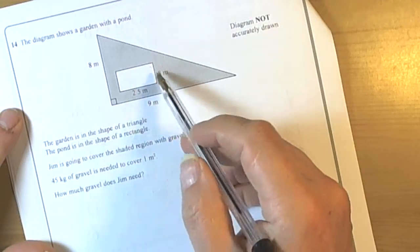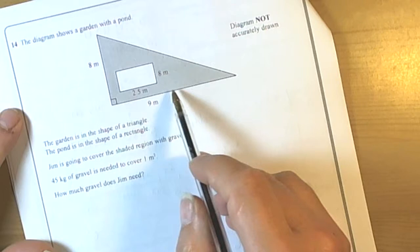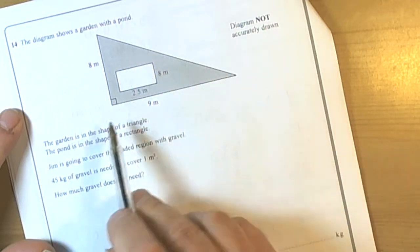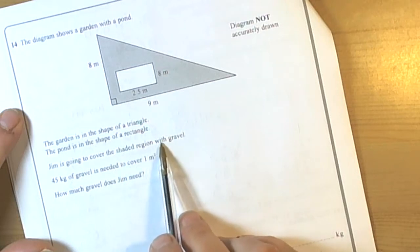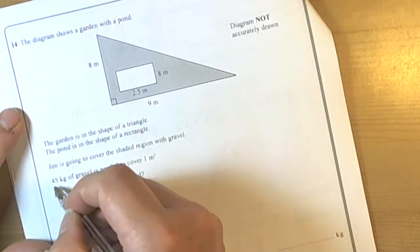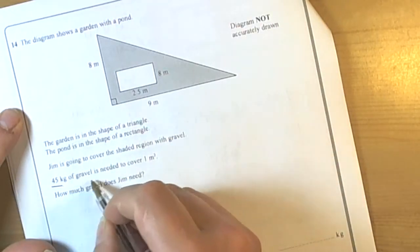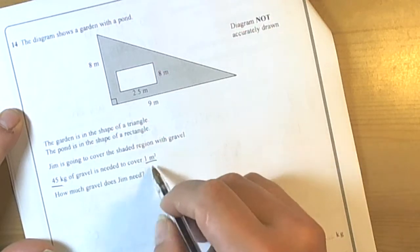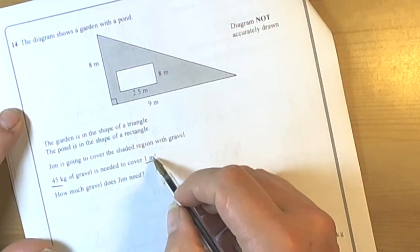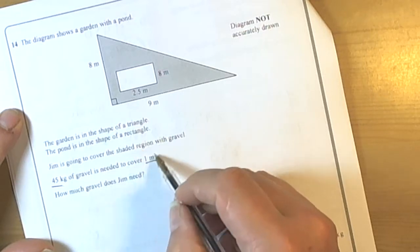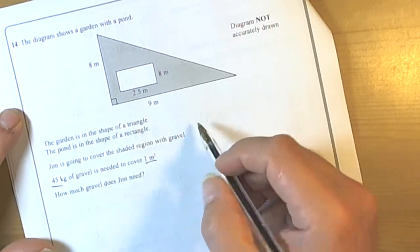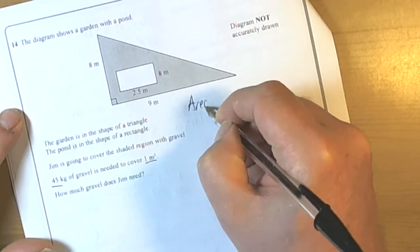This question is involving shapes, triangles and rectangles. Jim is going to cover the shaded region with gravel, and it's important information here. So 45 kilograms of gravel for one square meter. Now they mention the word square meter here, so it definitely tells us we're dealing with calculating areas so that we can work out the area of gravel needed. So expect us to know some formulas.